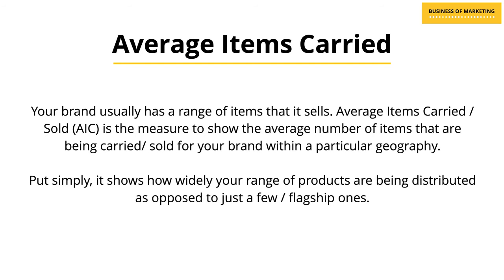The first thing I'll be talking about is a measure which helps you understand the depth of distribution, which is called average items carried or average items sold. Your brand usually has a range of items that it sells. Average items carried or sold is a measure to show the average number of items being carried or sold for your brand within a particular geography. Simply put, it shows how widely your range of products are being distributed as opposed to just a few flagship ones being distributed in a couple of stores.